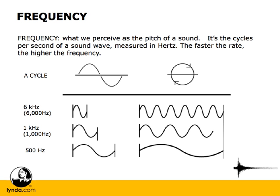Down below, we have several different frequencies and their sine waves. On the left, we have the frequency, and in the middle, we have one cycle of that frequency, and then on the far right, we have all three frequencies against the same amount of time. You can see that the higher the frequency, the shorter the cycle, and therefore, the more cycles that take place per second. We can see that there are quite a few more cycles per second at 6 kilohertz than at 1 kilohertz. So again, frequency refers to the number of times a sound wave completes a cycle.